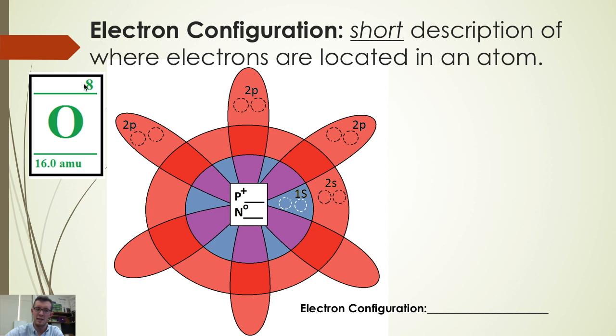Take for instance oxygen, which has eight positive protons and eight neutrons in its nucleus. Those eight protons will attract eight electrons which will attract into the most stable orbitals around oxygen first.